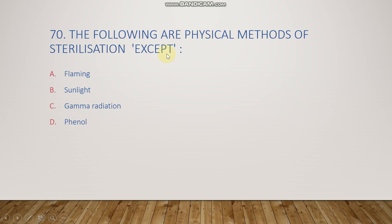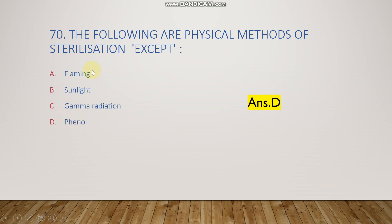The next question: the following are physical methods of sterilization except — flaming, sunlight, gamma radiation, or phenol? The right answer is option D, phenol, because phenol is a chemical reagent used for sterilization, while the other three are physical methods of sterilization.